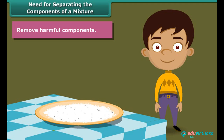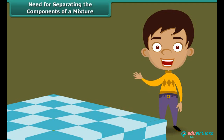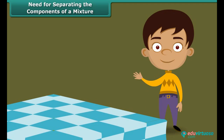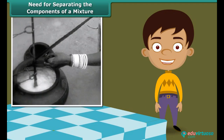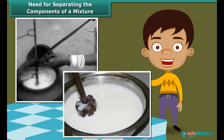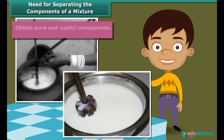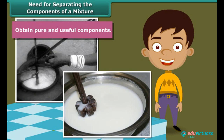When we churn milk or curd, we get two different but extremely useful products: butter and buttermilk. Thus, the third reason for separating the components of a mixture is to obtain pure and useful components.